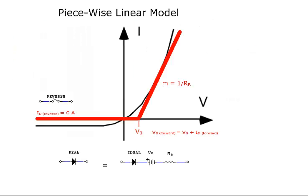An even more accurate diode model is the piecewise linear model. It includes an ideal diode in series with an opposing turn-on voltage, called V0, and the resistance of the diode's silicon body, called RB.